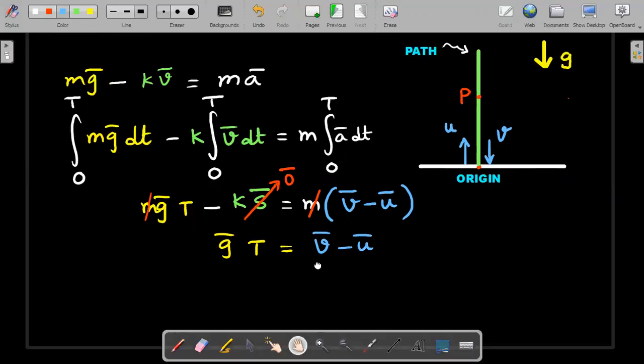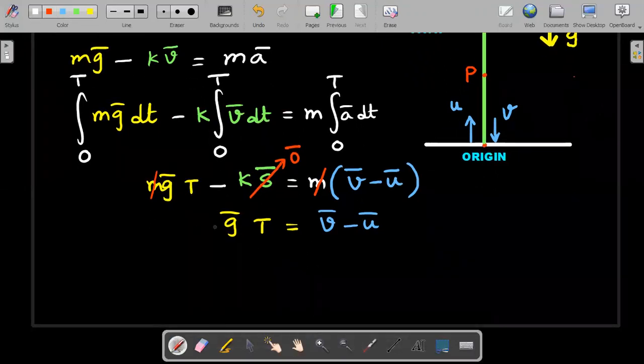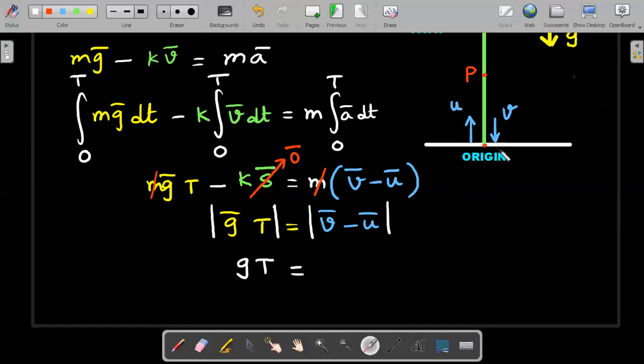Now I'll take modulus on both sides. When I take the modulus on both sides, the left hand side is a simple modulus that would be simply g capital T. The right hand side is very interesting. The velocity vector finally is downward, initially it was upward. So you're talking about subtracting two anti-parallel vectors and then taking a modulus. I think the magnitude of that subtraction is nothing but addition of the two magnitudes.